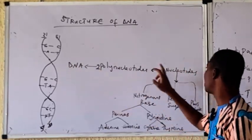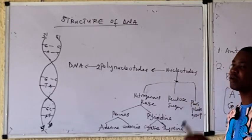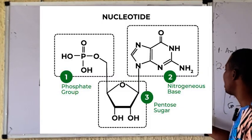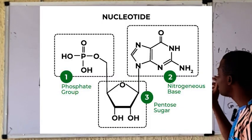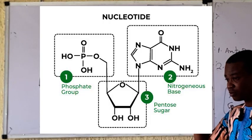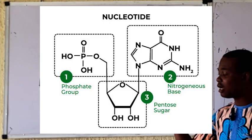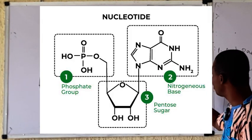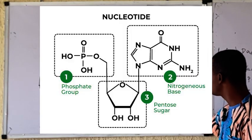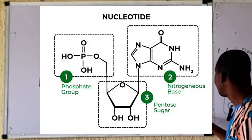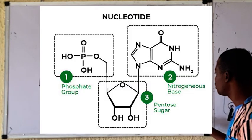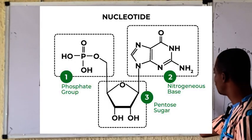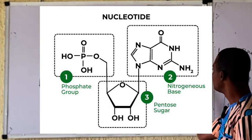Now let's take a look at nucleotides. What are the components of nucleotides? Nucleotides basically have three components: we have the nitrogenous base, we have the pentose sugar, and the phosphate group. So in every nucleotide, as displayed in the picture, we have a nitrogenous base, a pentose sugar, and a phosphate group. These three are the components of nucleotides.